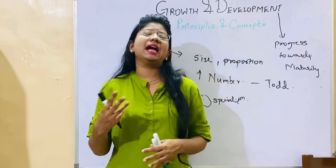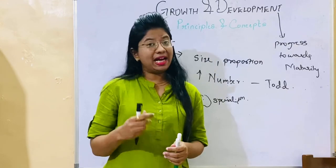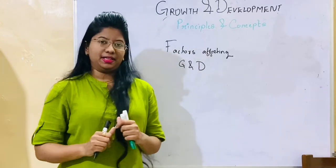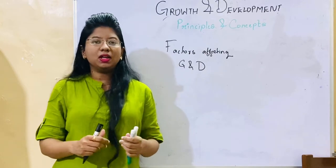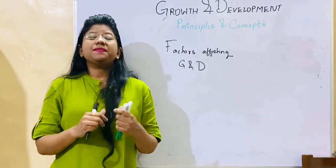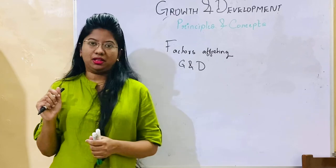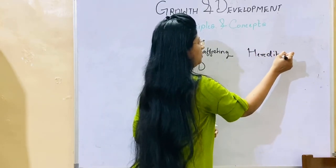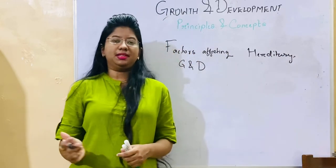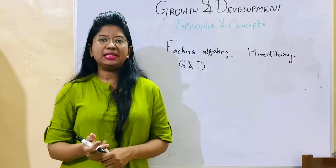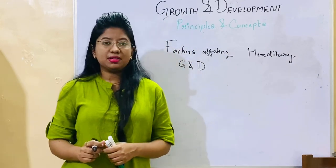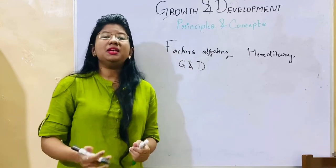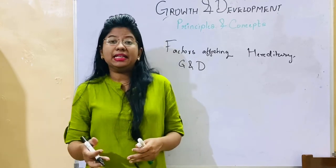Now we will learn about the factors which affect growth and development. The first factor is the hereditary factor, which means genes. You will see in some families there are short height children, and in some families there are tall height children. This means that genetics is affecting the growth.